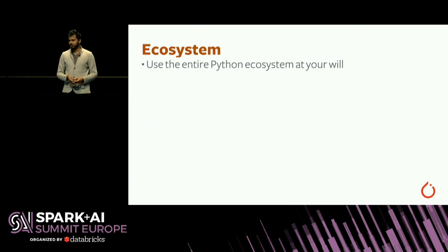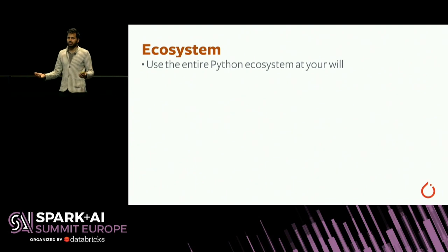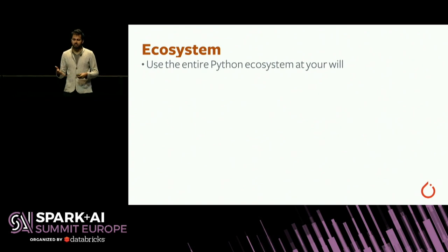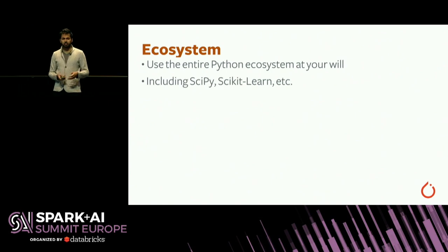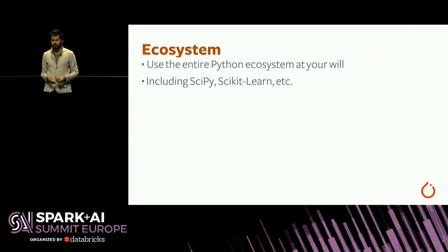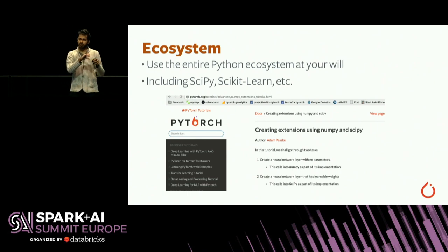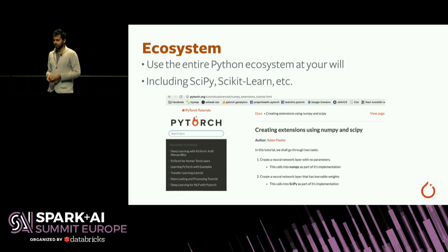You might ask: why PyTorch when there's TensorFlow, Keras, and many other tools? One thing we provide uniquely is really tight integration with the Python ecosystem. We have a nice NumPy bridge, so if part of your modeling pipeline uses scipy or scikit-learn, it's very easy to mix them. We have a tutorial showing how you can have part of your neural network in PyTorch and, for example, use scipy for signal processing in the middle — that's totally legitimate. We also provide a Model Zoo for vision and text models with pre-trained weights, so you can start from a state-of-the-art pre-trained model and fine-tune on your own data.